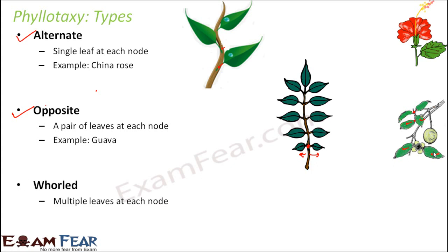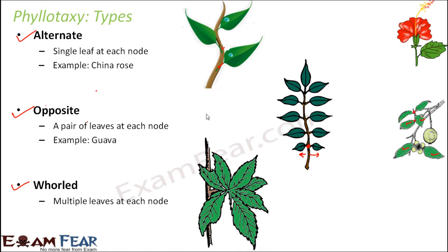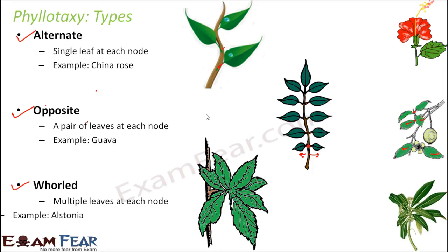The third type of phyllotaxy is whorled phyllotaxy. Here we have multiple leaves at each node — you will actually have a tuft or bunch of leaves at one node. An example is alstonia, where you can see multiple leaves arising from the same node. Many ornamental plants also show this kind of whorled phyllotaxy. So basically, leaves are arranged in alternate, opposite, or whorled phyllotaxy depending on the plant.